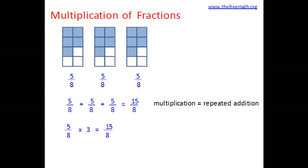Now if you look at the product, what do you see? You see that the numerator is multiplied by the whole number because 5 threes are 15 and the denominator is the same. So what we see is that when you are multiplying a fraction by a whole number, you multiply the numerator by the whole number and the denominator remains the same.